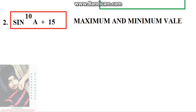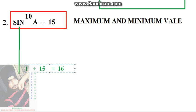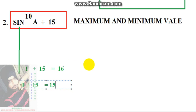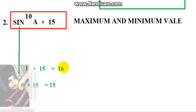Moving to the next question: sin^10(a) + 15. Since the power is even, the maximum value of sin^10(a) is 1, giving 1 + 15 = 16. For the minimum, sin^10(a) equals 0, giving 0 + 15 = 15. So the maximum value is 16 and the minimum value is 15.